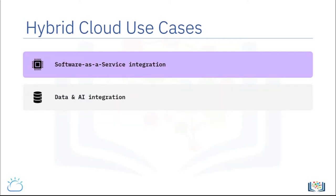Data and AI integration is another use case. Organizations today are creating richer and more personal experiences by combining new data sources on the public cloud — such as weather, social, the Internet of Things, CRM, and ERP — with existing data and analytics, machine learning, and AI capabilities.